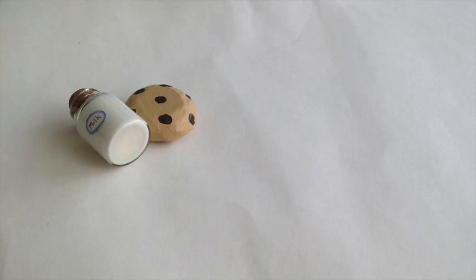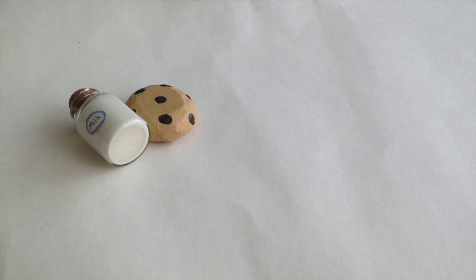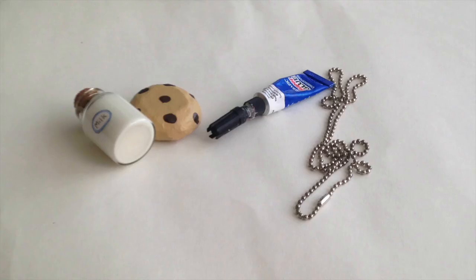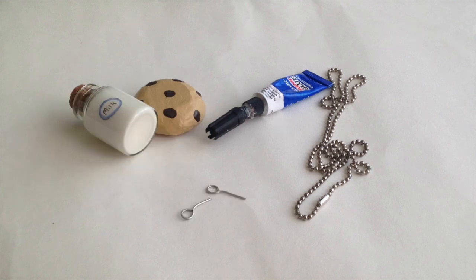So now we are going to attach them together to make it a charm. First you will of course need the milk and cookie, super glue, a ball chain it does not have to be long like mine, and two eye pins.